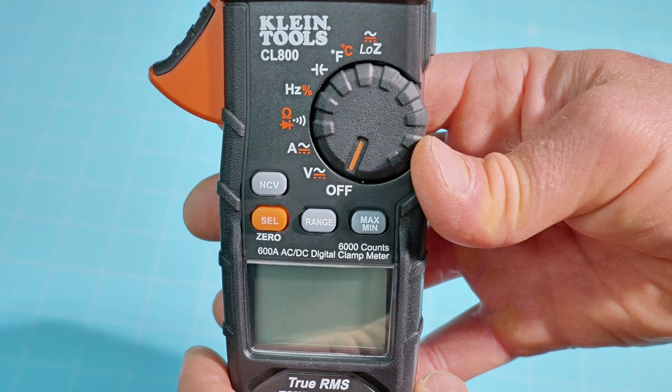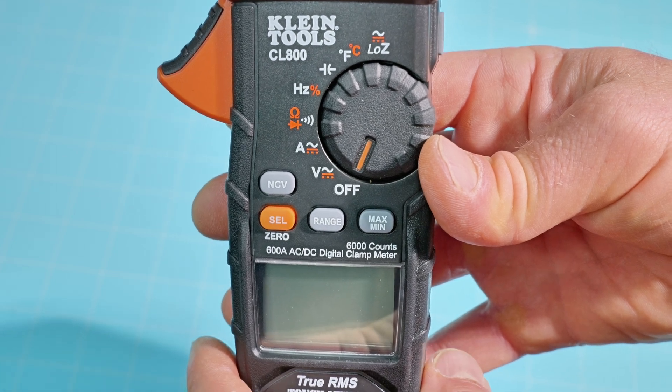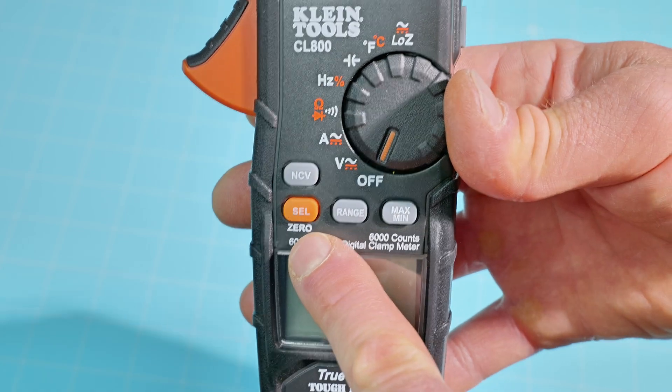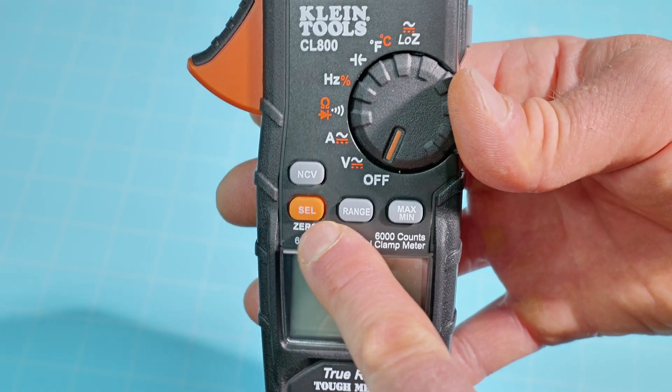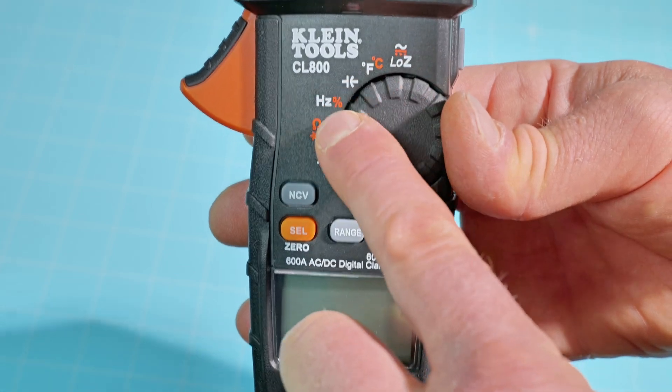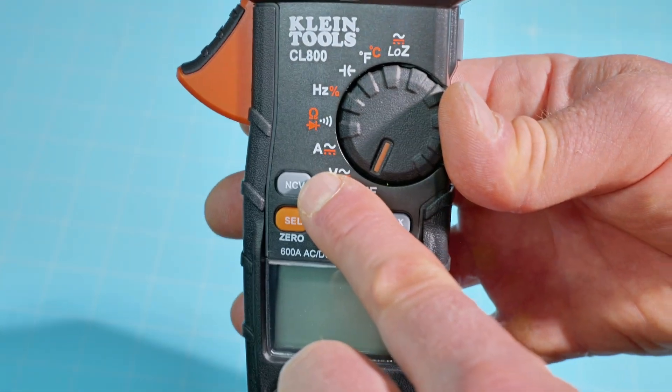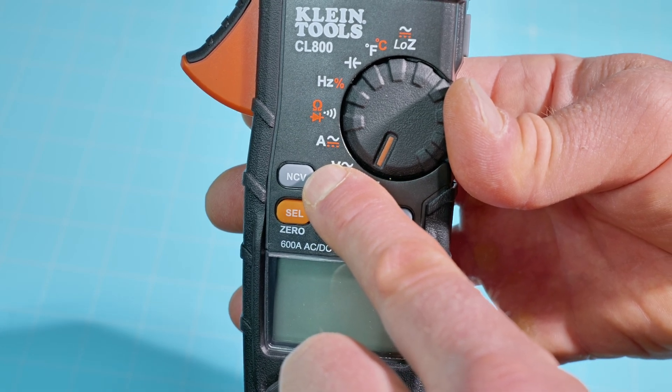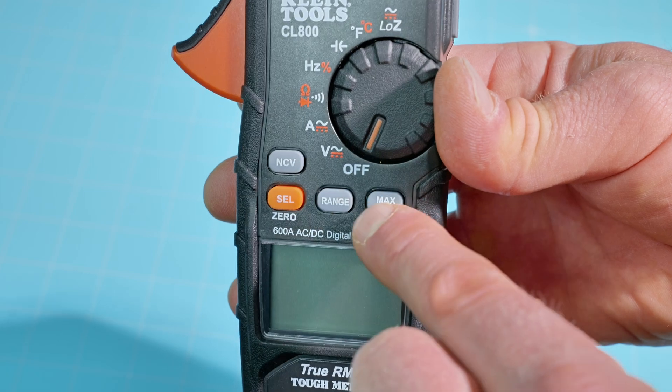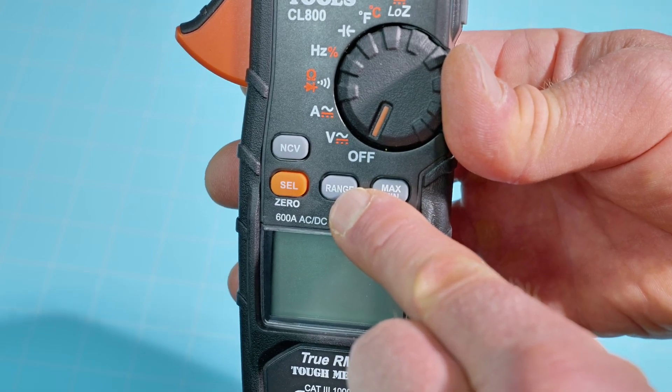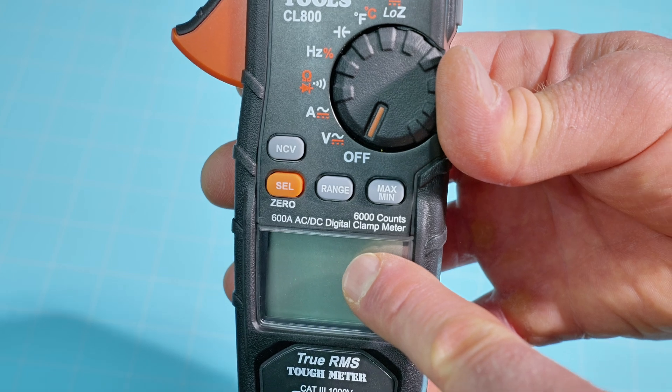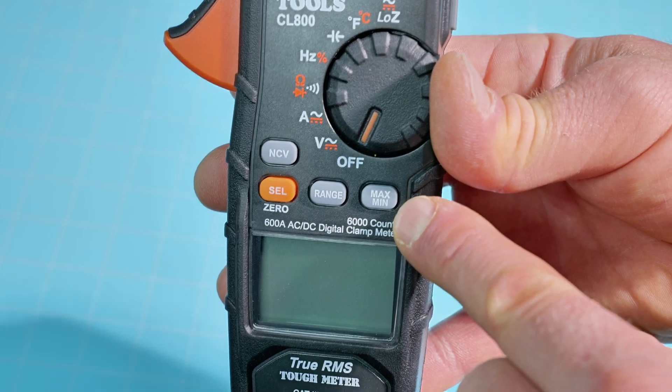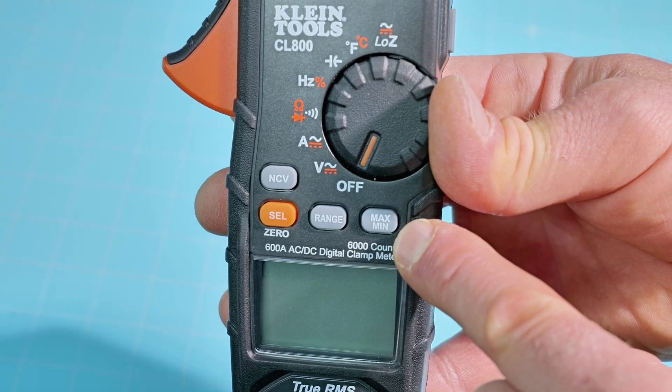I'm going to show you all the buttons and dial features of the Klein Tools CL800 before we get into using each one. We have the zero slash select button right here. The select button toggles between different features on your dial. You have your NCV button, that's the non-contact voltage button. We have our range button, which moves your decimal point on your display or puts it into auto range. We also have our min max button if you want to view your min max readings.